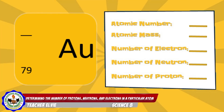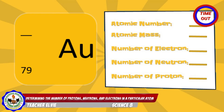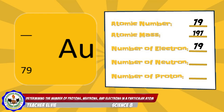Number 2: Gold. The atomic number is 79, atomic mass is 197, number of electrons is 79, number of neutrons is 118, and number of protons is 79.